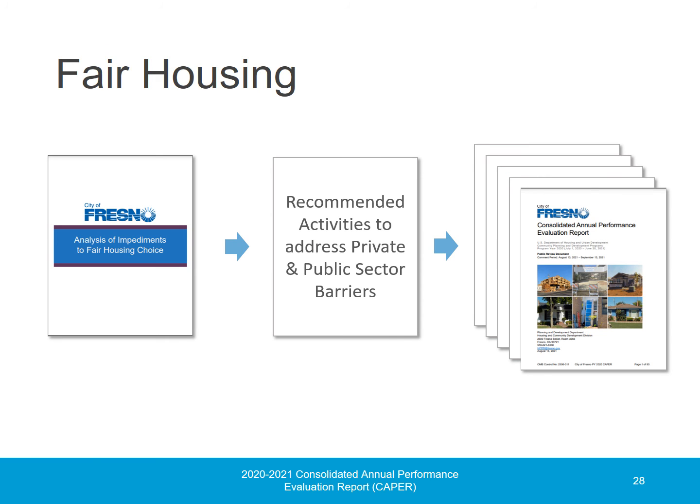The City of Fresno is also required by HUD to report on activities in support of fair housing. The City updates its Analysis of Impediments to Fair Housing Choice, or AI document, through analysis and public participation at least every five years, with the most recent update in 2020. The AI identifies barriers to fair housing choice and provides recommended activities to address those barriers. The City reports activities undertaken according to those recommendations in each year's CAPER report, including activities that address overt fair housing issues as well as systemic barriers.